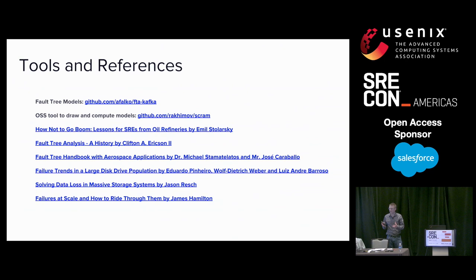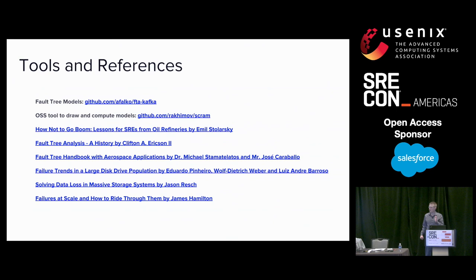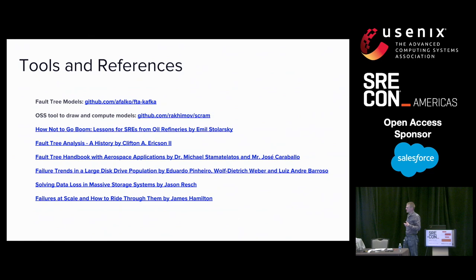If you're in the back of the room and you have trouble reading the diagrams, don't fret — you don't need to go to an eye doctor. You can go to afalco/fta-kafka on GitHub and view the diagrams at your preferred zoom level. The open source tool that I use to draw the diagrams is rakimov/scram on GitHub as well. The talk that inspired this talk from last year's SREcon is linked there as well.